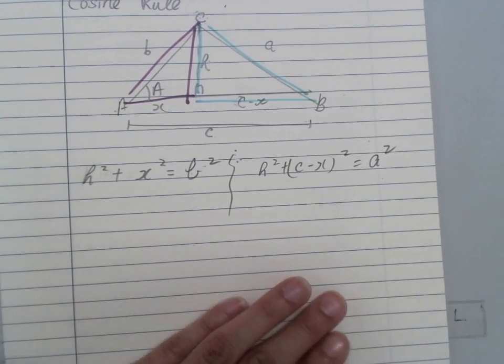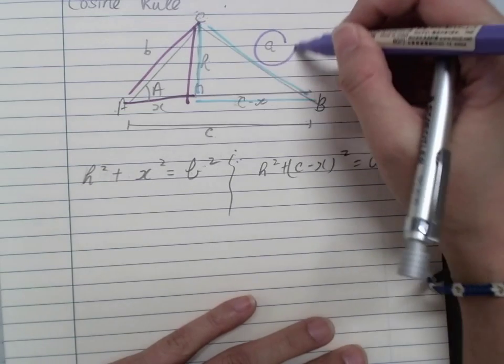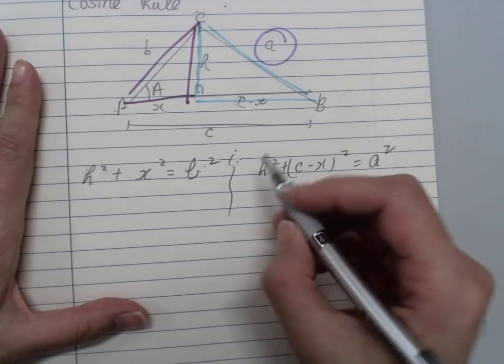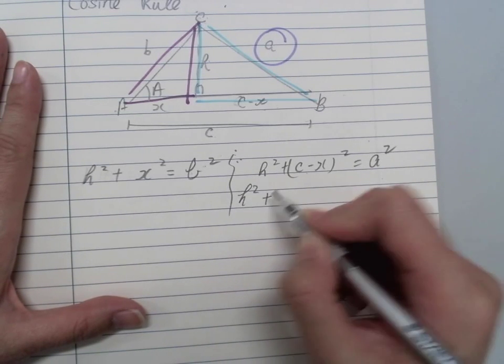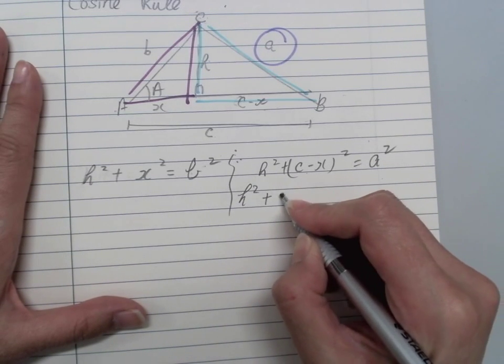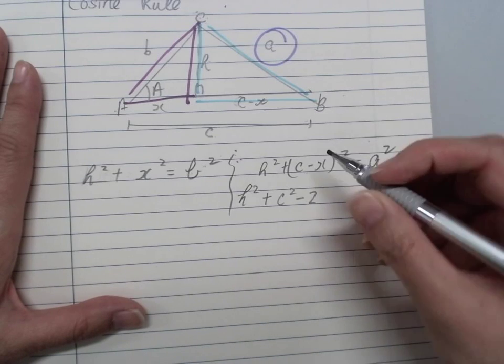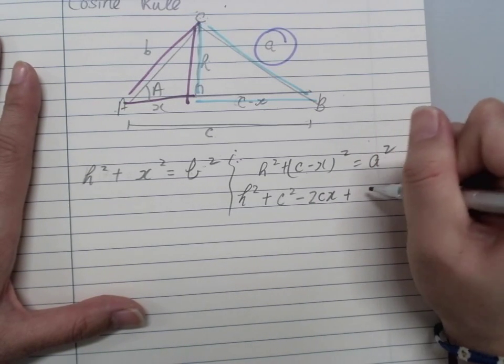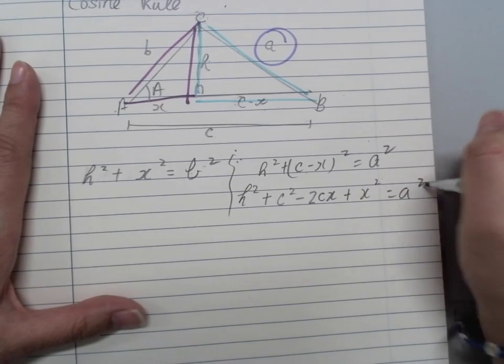Today our goal is A. We need to find A in terms of something. All right, A² maybe. So I'm going to expand this one. X² + C² - 2CX + X² = A².